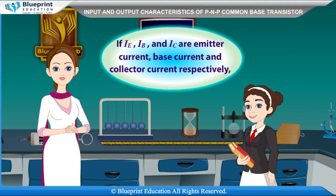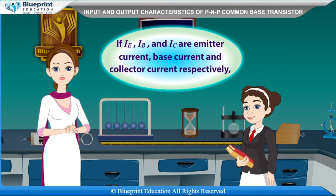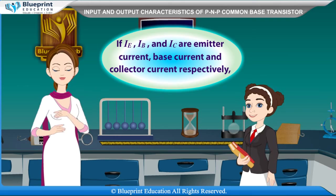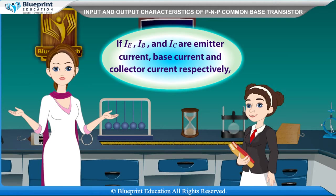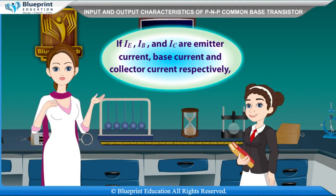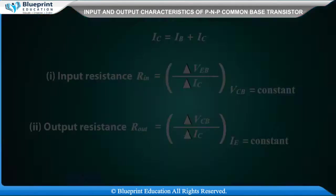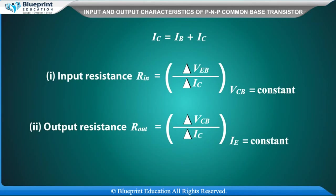If IE, IB, and IC are emitter current, base current, and collector current respectively, then IE is equal to IB plus IC.